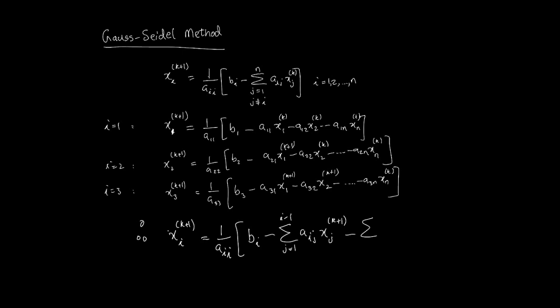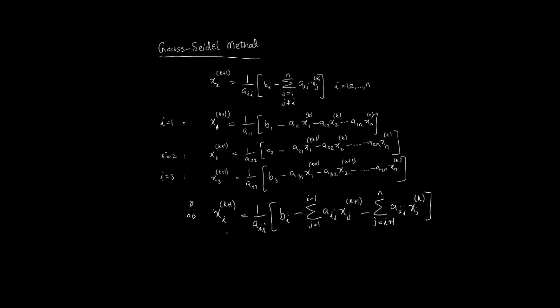So I can do this sum from j equals 1 right up to 1 less than the i. So I can go up to i minus 1. And what I'm going to do there is this is aij. But the xj that I have here, I would use the k plus 1 iterate because I have already calculated them. And then I'll have the remaining values, which will go from j equals i plus 1 all the way up to n. And then I have my aijs and xj, and that will be just the kth iterate.